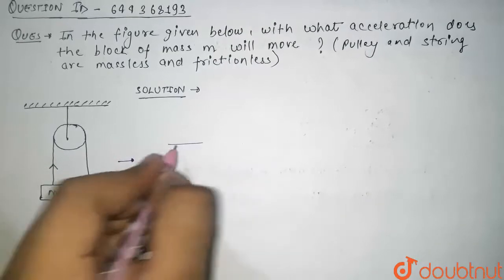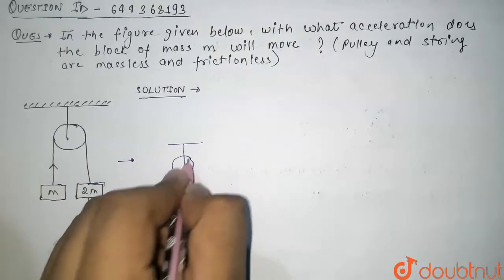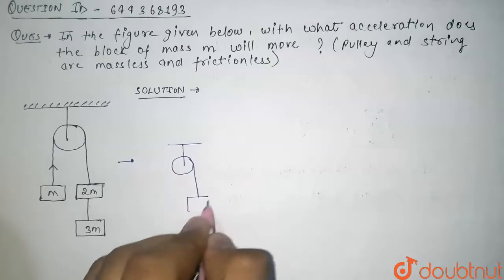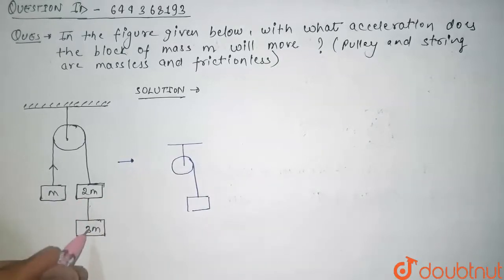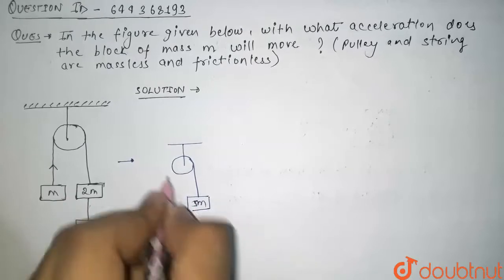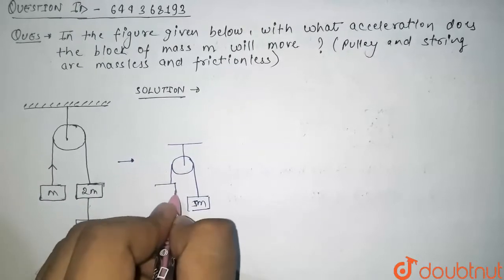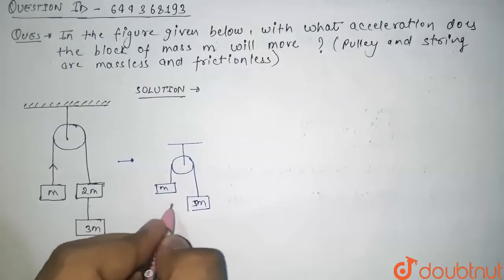So here we can draw it as this. This is our mass. Now we will combine 3m and 2m mass to form a single block. So it will be 5m mass and this is m mass. We have to basically find the acceleration of this m mass.